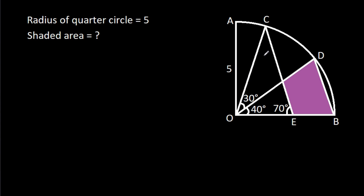In this video, we have been given that angle COD is 30 degrees, angle VOD is 40 degrees, and angle COO is 70 degrees, and the radius of quarter circle AO is 5. We have to find the shaded area.